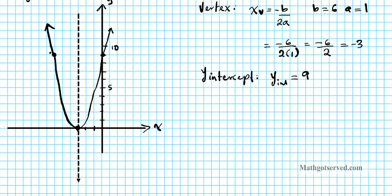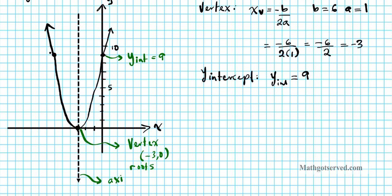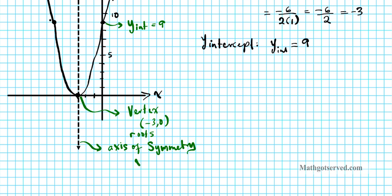After graphing your parabola, you're expected to label completely. This point, which is the double root, is also the vertex with coordinates negative 3, 0. This point is your y-intercept, which equals 9. This line is your axis of symmetry, and the equation of the axis of symmetry is x equals negative 3.